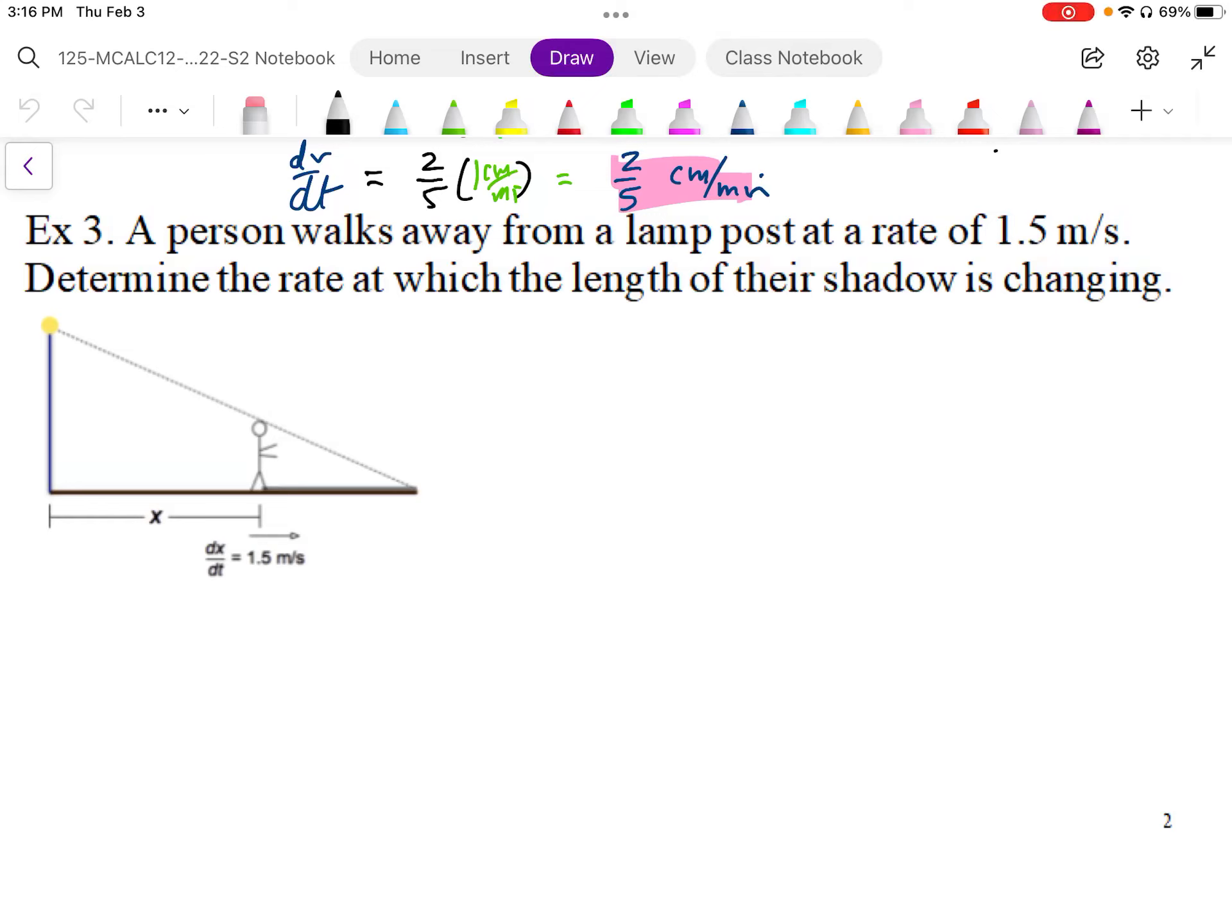This problem is another typical problem. It's a lamppost problem and basically it relates to similar triangles. So here it says that we have a person walking away from the lamp at a rate of 1.5 meters per second.